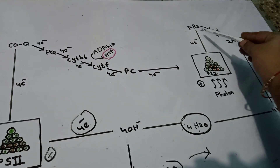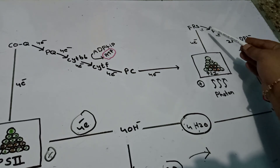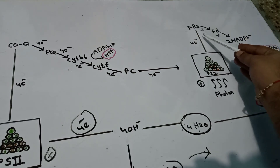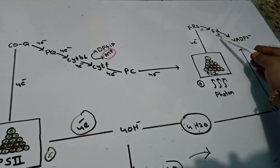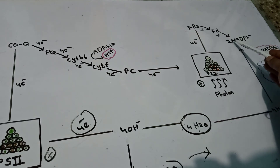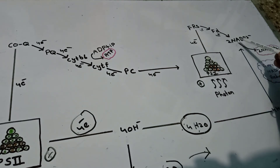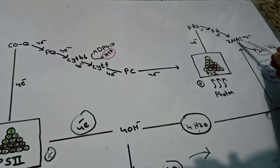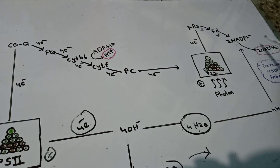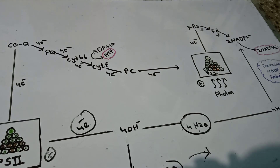After Photosystem 1 ejects its electron, that electron is transferred to the ferredoxin-reducing substance, then to ferredoxin, and from ferredoxin the electron is transferred to NADP. After receiving the electron, the NADP molecule becomes NADP²⁻, and then it is converted into NADPH₂.